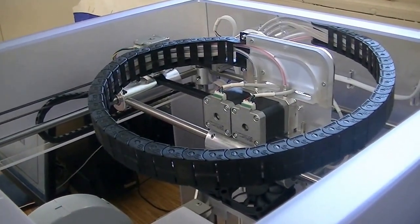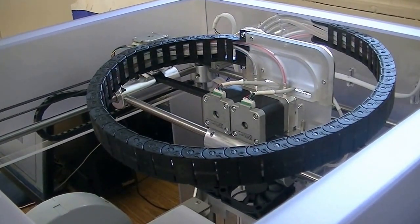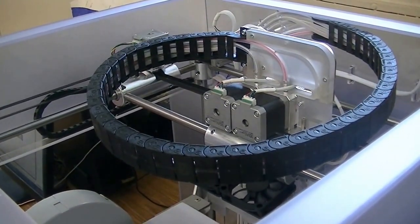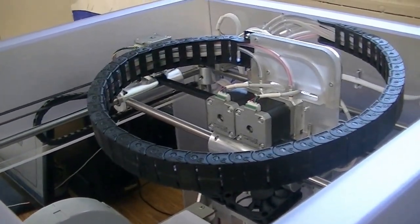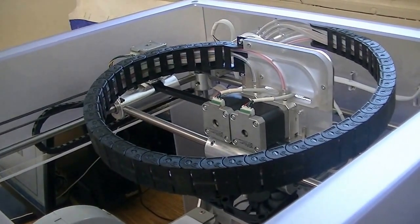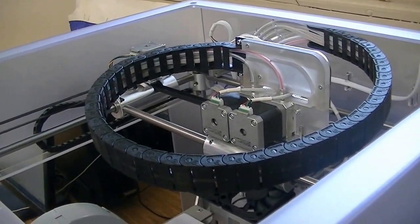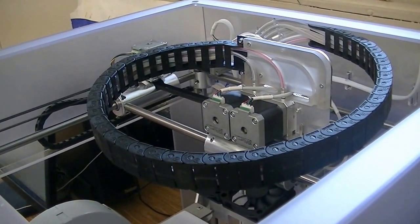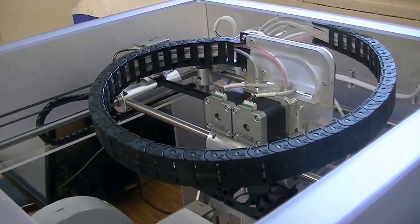This differs from subtractive manufacturing, in which material is hewn from a raw material, such as metal or wood, to produce a finished product. Traditional subtractive devices include milling machines, lathes, drill presses, and other industrial machinery.